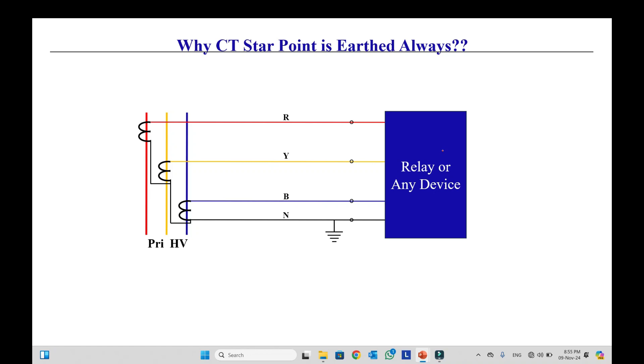Before answering this question, we have to understand the CT circuit. Usually the CT circuit looks like this. This is a very simple case I made for understanding. We have red phase, yellow phase, and blue phase CTs. These CTs are connected in star. So this is our star point and it's neutral. So we have red phase, yellow phase, and blue phase going to our relay.